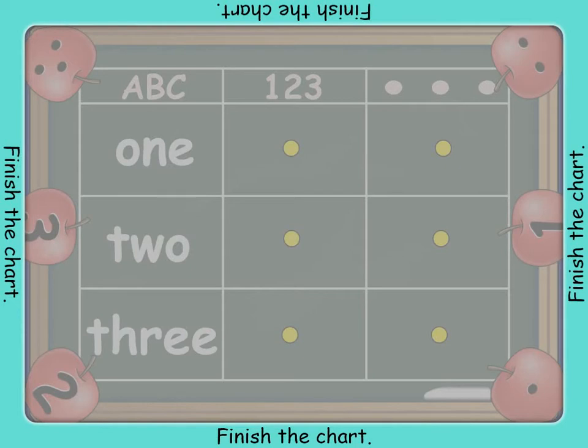1, 2, and 3 can be shown as numbers, words, and dots.